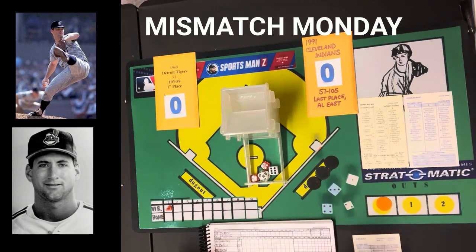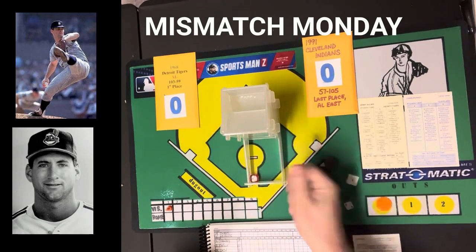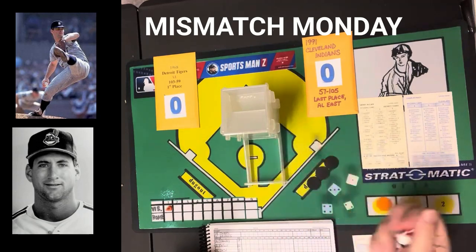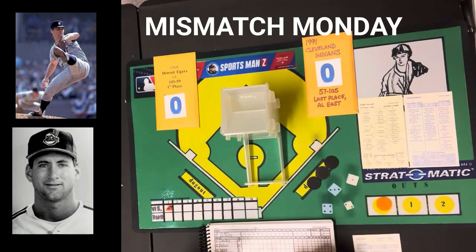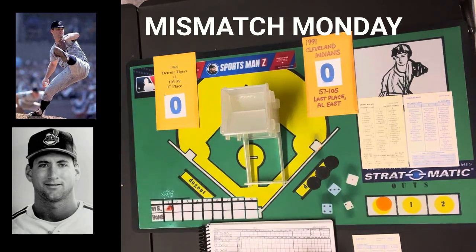Other than that, there will be no ballpark effects and no righty versus lefty. It's just going to be the result straight off the basic cards for both teams. Even though I have advanced information for the '91 Indians, it wouldn't be fair to do the Indians on righty-lefty and Detroit on straight up. So for as even a playing field as you can get with a team that won over 100 games and another that lost over 100, we're going to do the basic game.